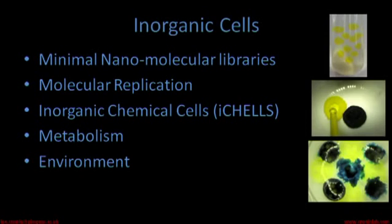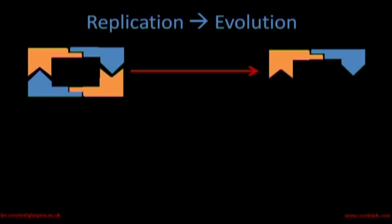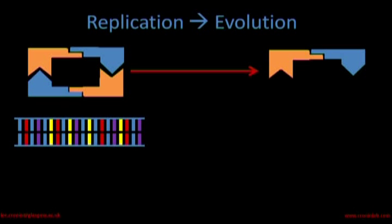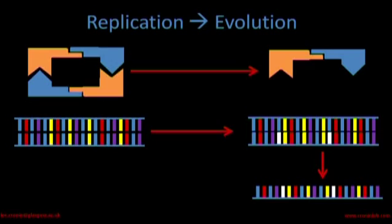We've made some inorganic cells in the lab. They're minimal nanomolecules — they can undergo some aspects of replication. We call them iChels. They react in their environment and they have a metabolism, but they need something more. Life is not just about chemistry; it's about a process that we call evolution in a strict sense — evolving molecules in the device. Rather than just copying the molecule faithfully, making a perfect copy, we would make a polymer, and that polymer could mutate. You can see the analogy with DNA — we need to build mutatable molecules into our chemistry network.